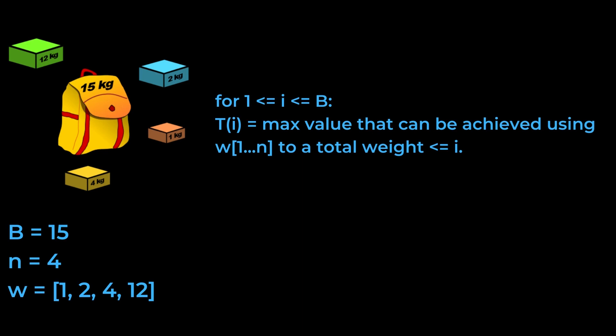In the recurrence relation we first set up our base case, T(0) is equal to 0. For values of i greater than 0, we're going to consider the different items we could take. For each item we can take, we're going to consider how much value it contributes and how much value can be made from the remaining weight, which can be found by looking back at previous values in the table.